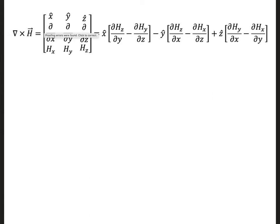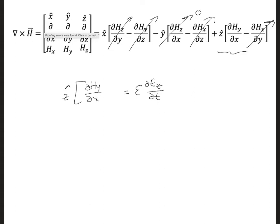Evaluating the curl operation on the H field, we get what's shown here. All the partial derivatives with respect to y and z are equal to 0, so these all go away since the fields do not change in those directions. And since the wave is z-polarized, the right side of Ampere's law must be epsilon dEz/dt. That will give us an electric field in the z direction, which means for the left side of the equation we must also have a z component. Therefore, we can only have the term dHy/dx, and this other term is also going to be 0 for our z-polarized wave.